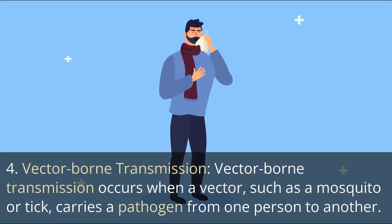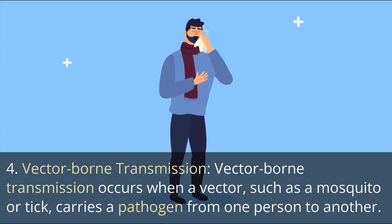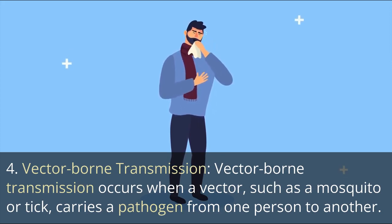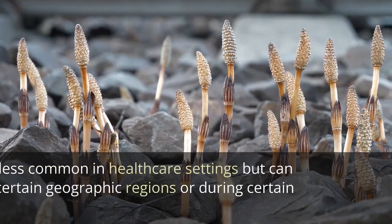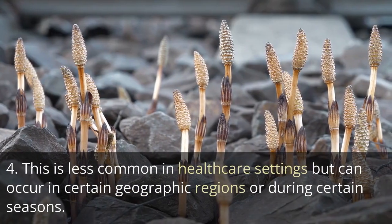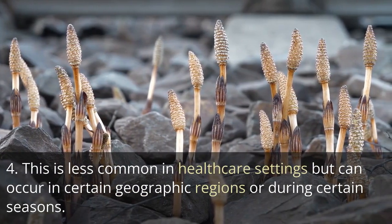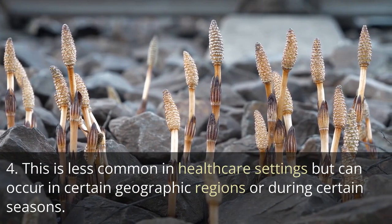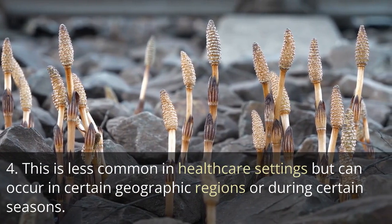The fourth route is vector-borne transmission. This occurs when a vector, such as a mosquito or tick, carries a pathogen from one person to another. This is less common in healthcare settings but can occur in certain geographic regions or during certain seasons.